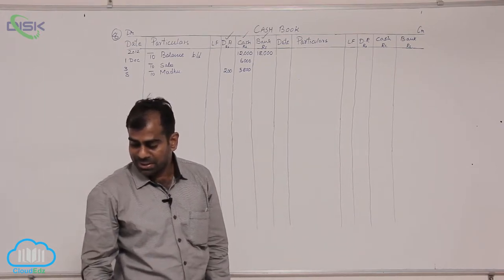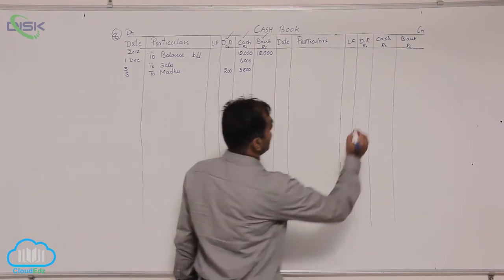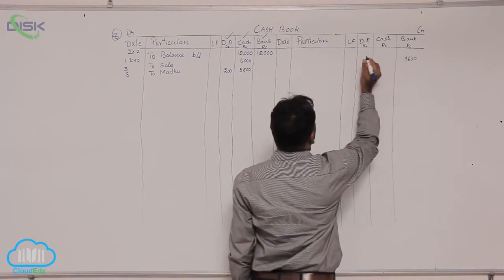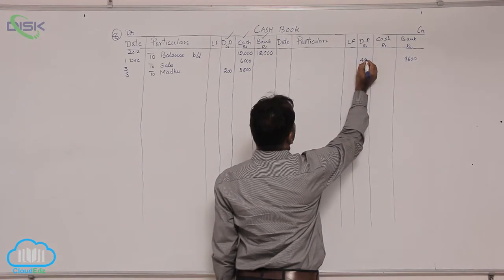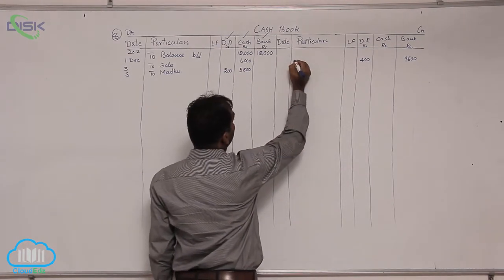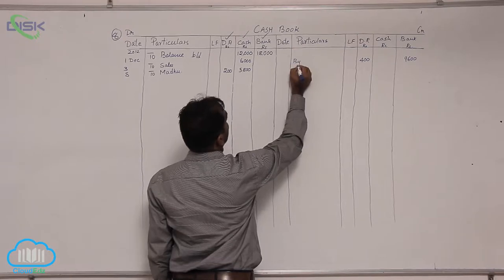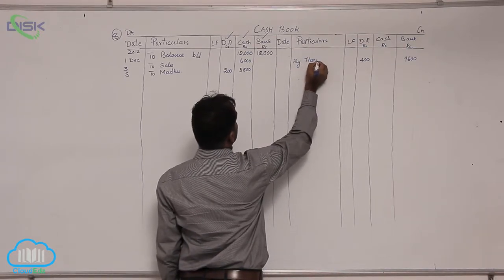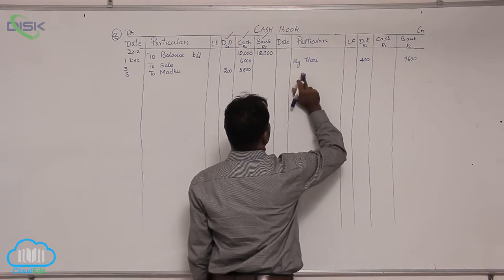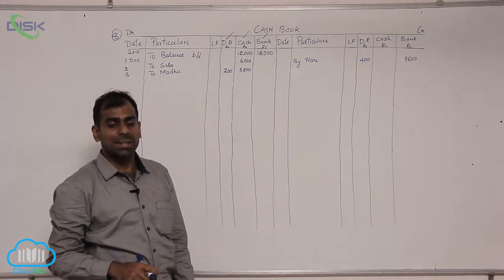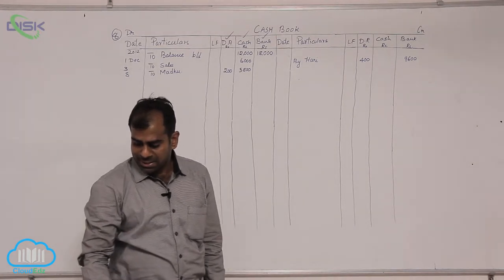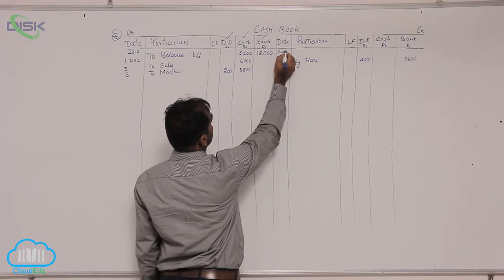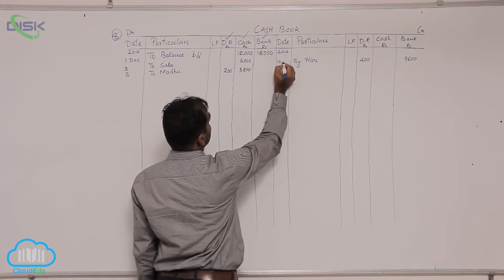So how do we record this transaction? 9600 we record in the bank column and 400 we record in the discount received column. Now, 'by' is constant and we have to write the name of Hurry because to Hurry we are making the payment. The date is 14th December 2012.